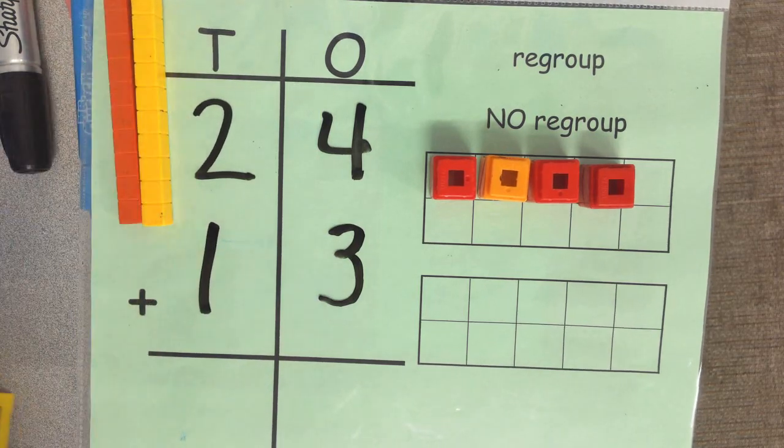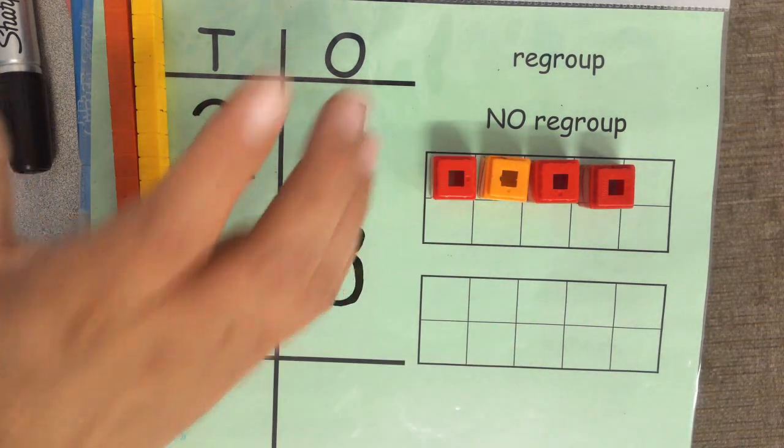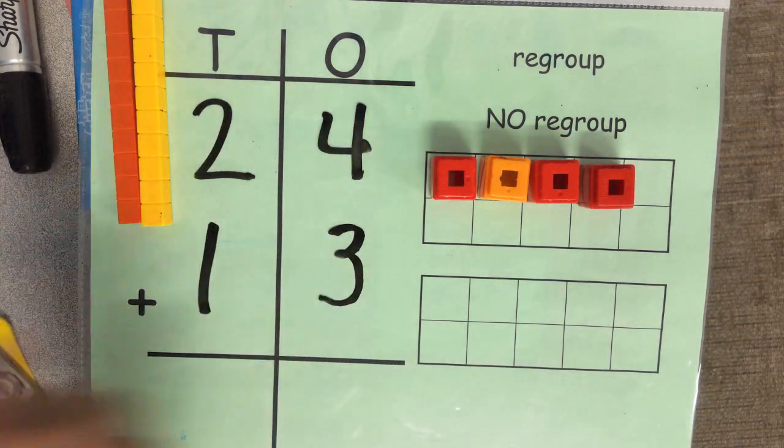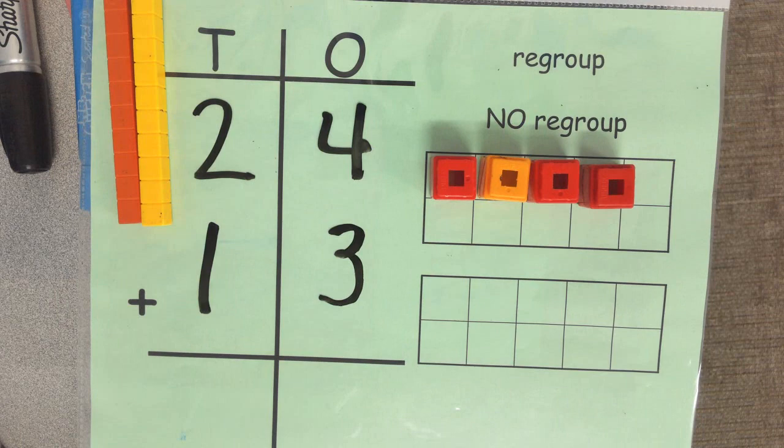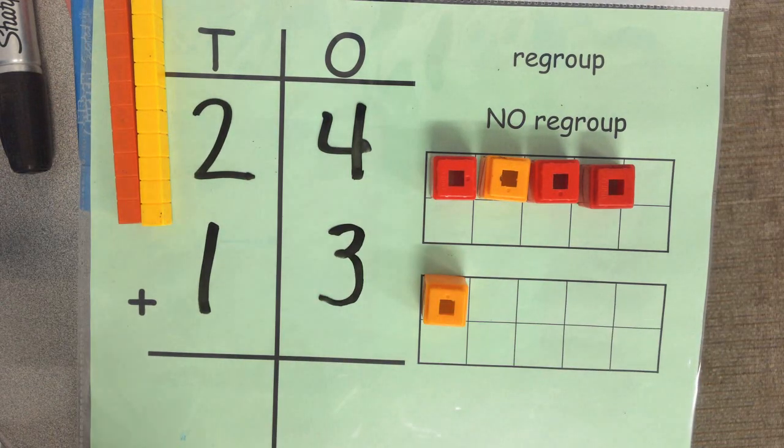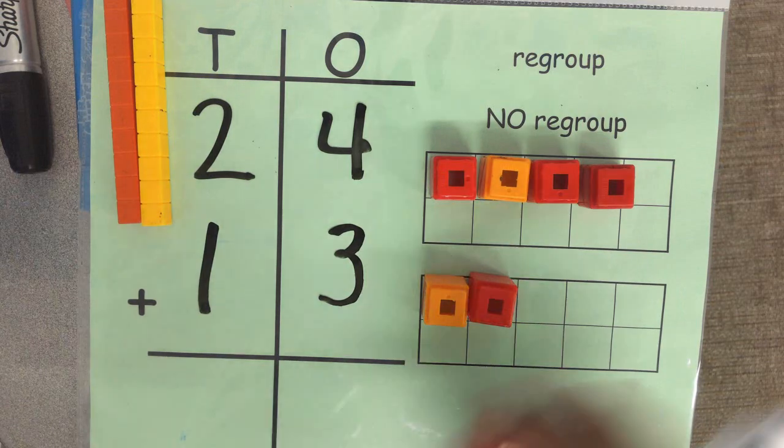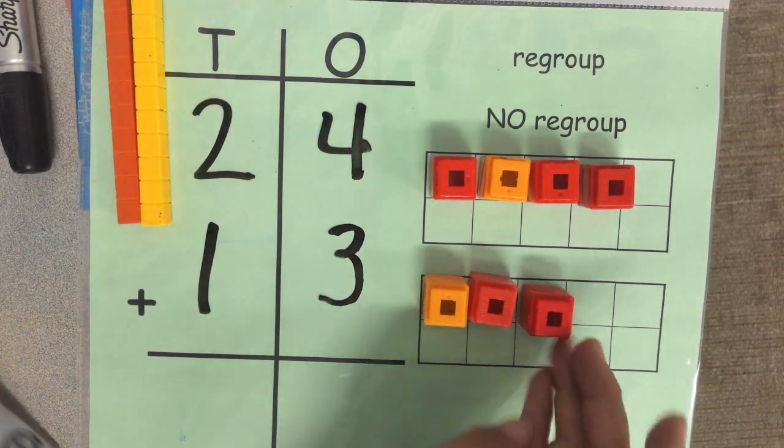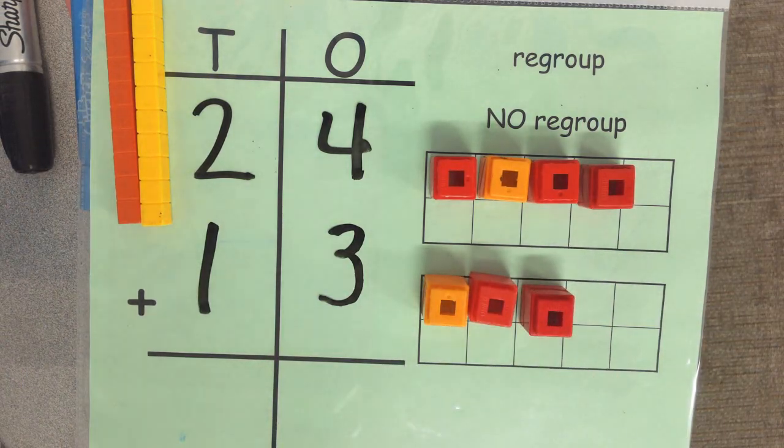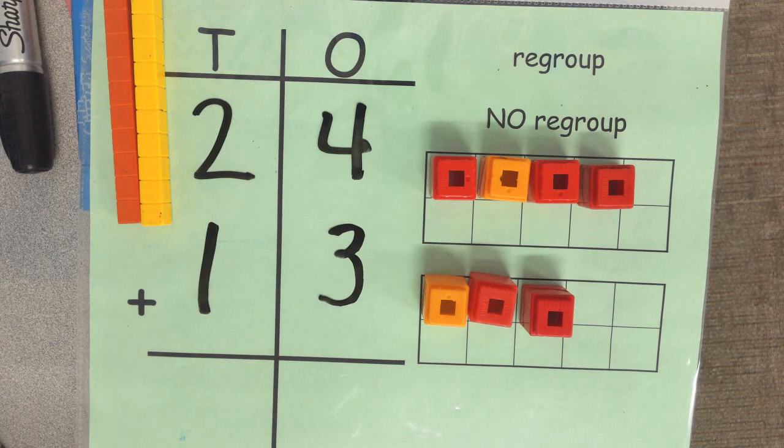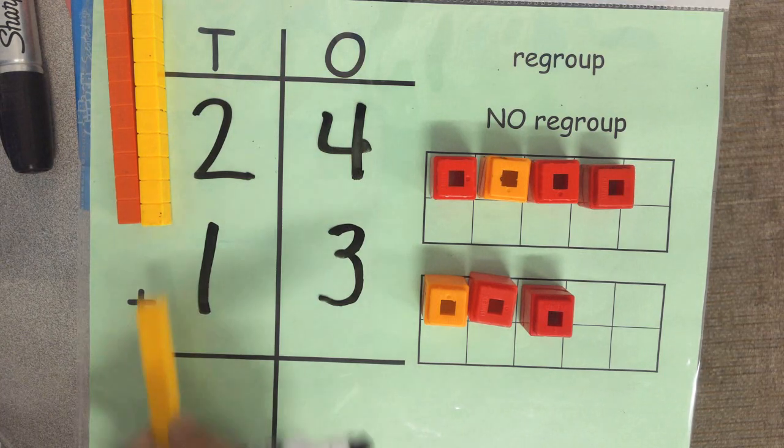Well, when we have addition, you need to also build the bottom number. You are adding on 13 to the 24. How many ones do you have? You have three ones. So you're going to put 1, 2, 3. And then groups of 10, you have one group of 10.